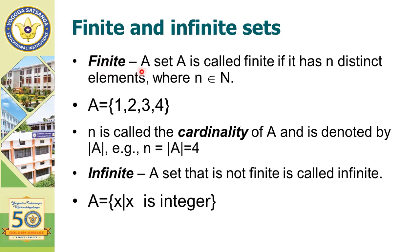Finite sets are those sets which contain a finite number of distinct elements. For example, A is equal to {1, 3, 3, 4}. There are 4 elements in this set. Hence, it is a finite set. In finite sets, we can decide what will be the value of the cardinality — that is, the number of elements. Here, n is equal to 4. That is, the cardinality of A is equal to 4.